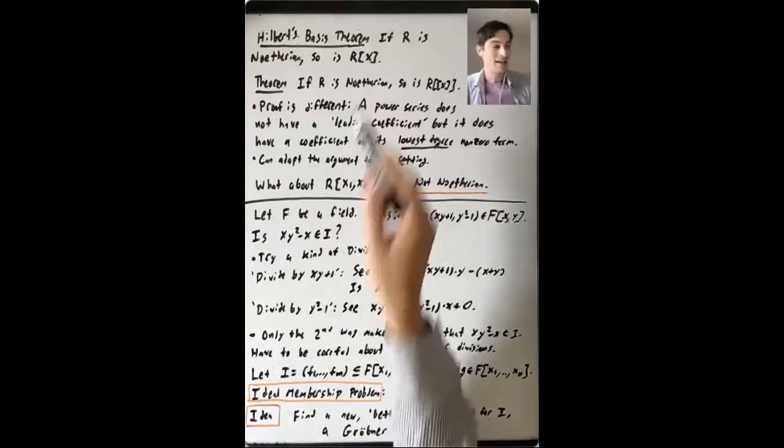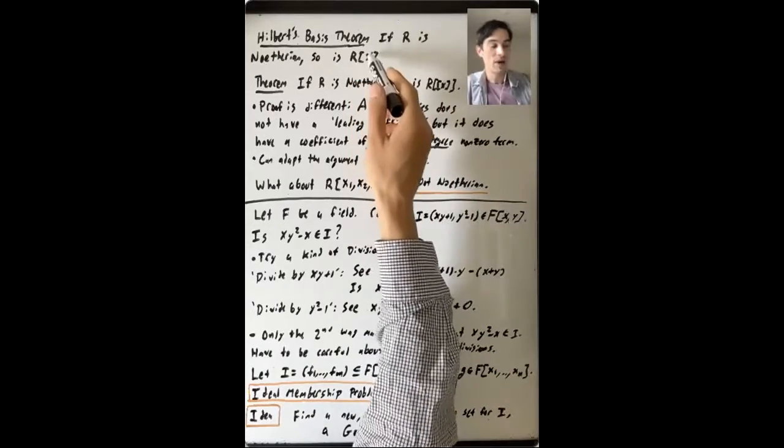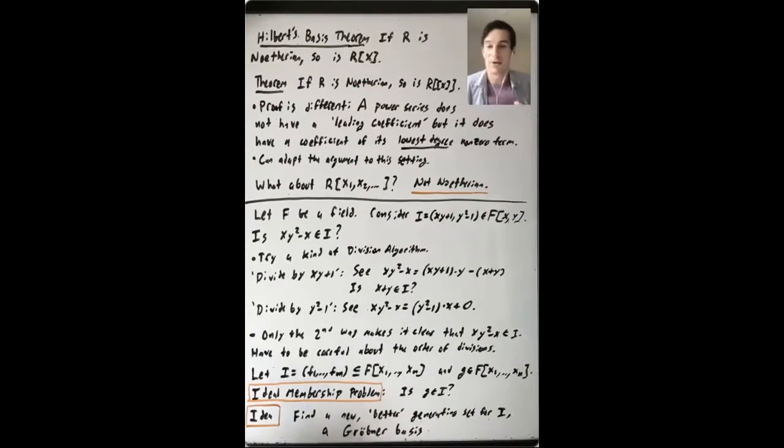So another thing is we said that if R is Noetherian, then so is R bracket X. And then by induction on the number of variables, so is R bracket X1 up through XN, the polynomial ring in N variables.